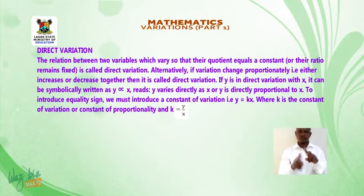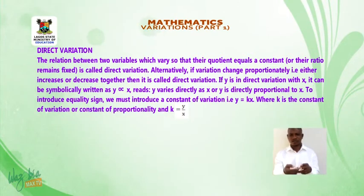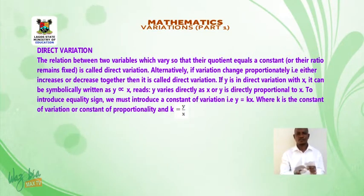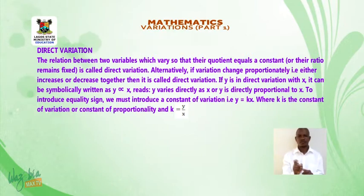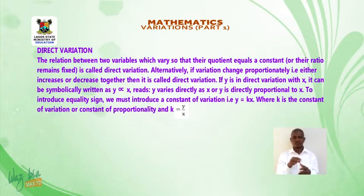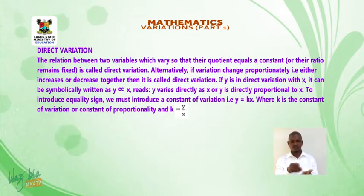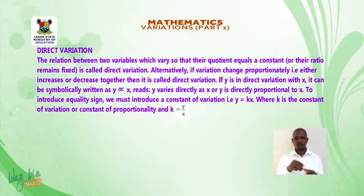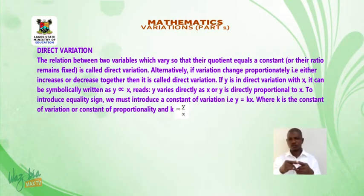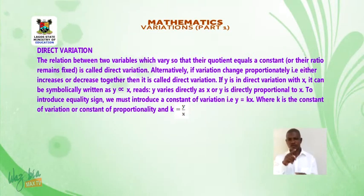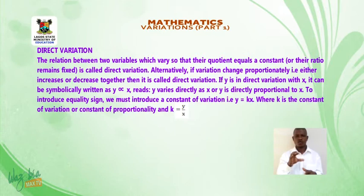Alternatively, if variables change proportionately — that is, either increase or decrease together — then it is called direct variation. If y is in direct variation with x, it can be symbolically written as y varies directly as x, or y is directly proportional to x. To introduce an equality sign, we must introduce a constant of variation: y = kx, where k is a constant of variation or constant of proportionality, and k = y/x.